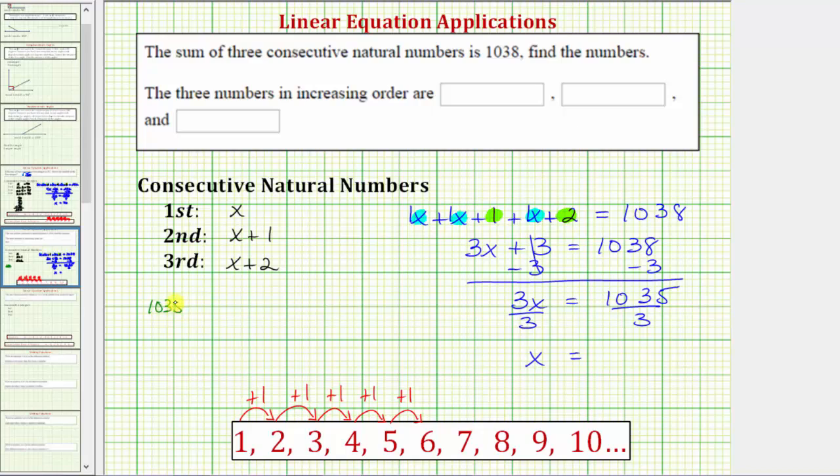Let's find this quotient on the side. We have 1,035 divided by three. There are three threes in ten. Three times three is nine. Subtract. Ten minus nine is one.